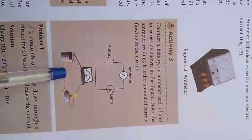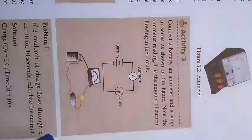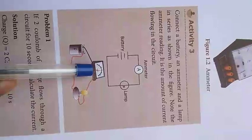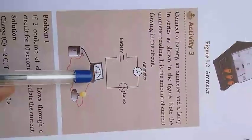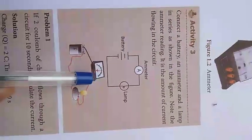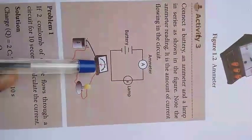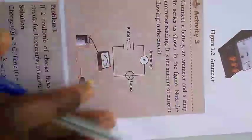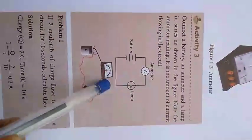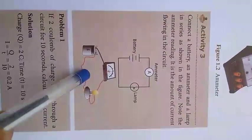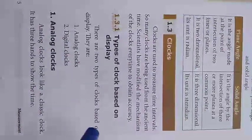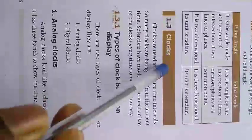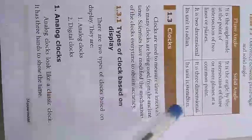In a circuit with a battery and bulb, an ammeter is connected to measure how much electric current is flowing. The ammeter measures the electric current in the circuit.